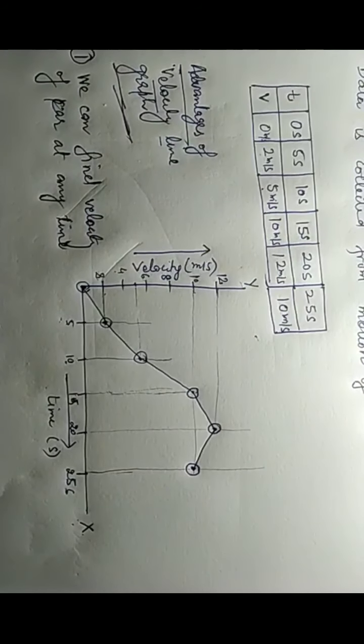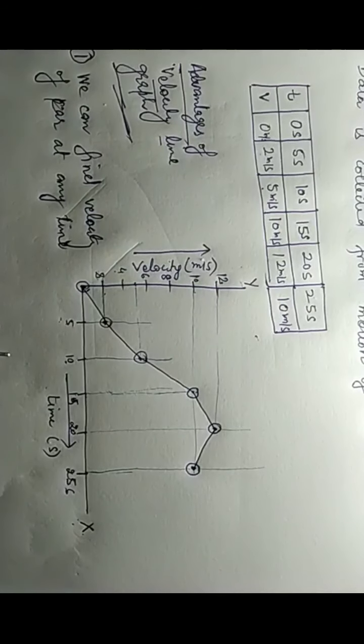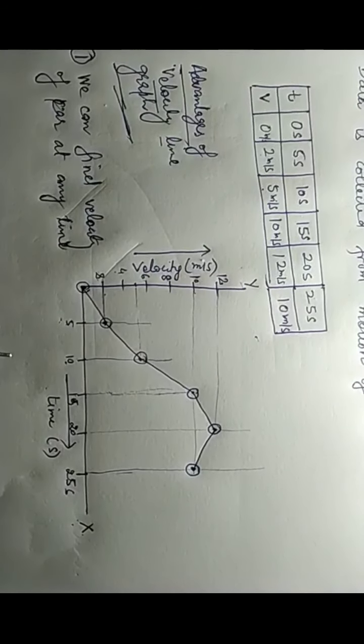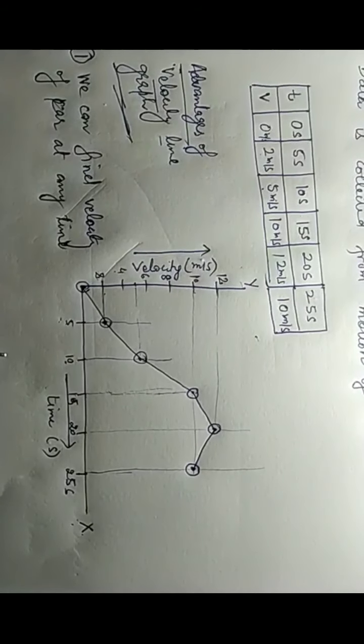From the given data table, I cannot directly find the velocity at times other than those listed. For example, if someone asks the velocity at 7 seconds, 12 seconds, or 23 seconds, I cannot find it directly from the table — it would require a lot of calculations. But from the graph, I can find the velocity of the particle at any time.